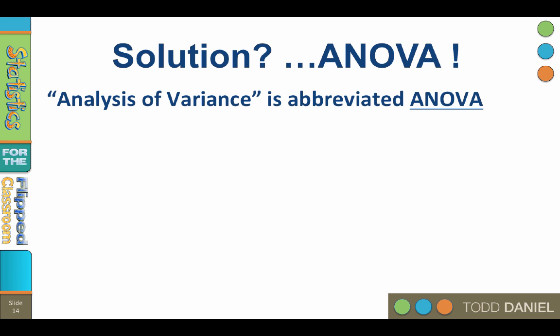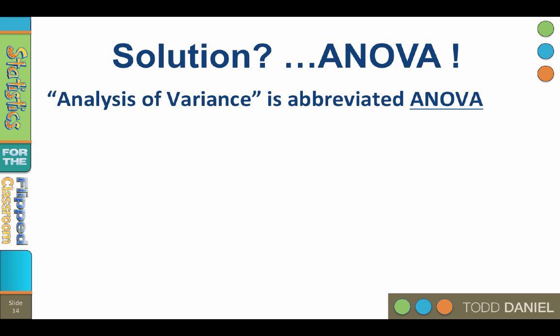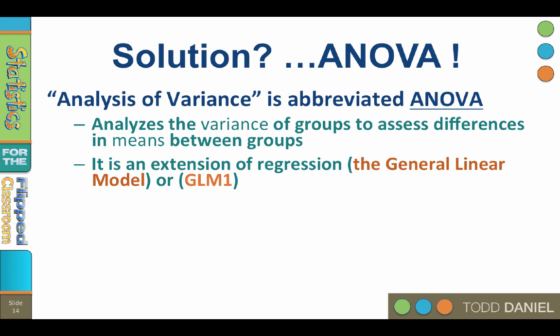Analysis of variance is abbreviated as ANOVA. Analysis of variance analyzes the variances of the groups to assess differences in means between the groups. ANOVA is actually an extension of regression, called the General Linear Model, or GLM. In SPSS, it will be one of five models called GLM-1 through GLM-5. We will be talking about the GLM-1 model, which can be used with one independent variable with any number of conditions or levels.